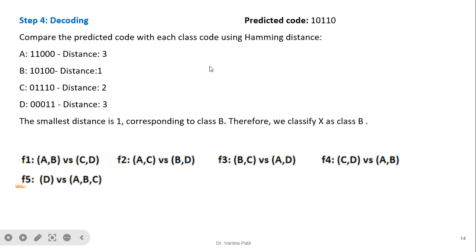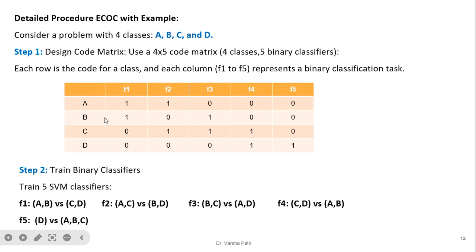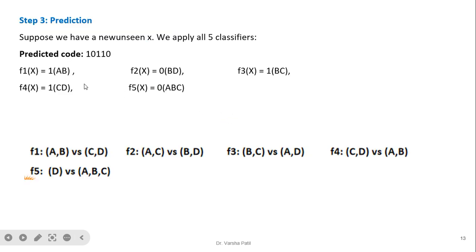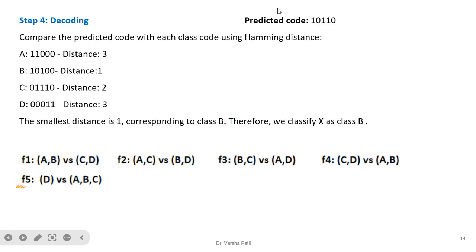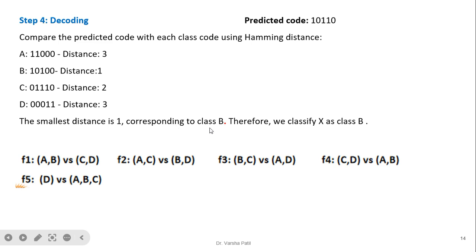We now compare the predicted code 1, 0, 1, 1, 0 with each class code using Hamming distance. When bits are the same, the distance is 0; when bits differ, the distance is 1. Class A is coded 1, 1, 0, 0, 0 — compared to predicted code: three mismatches, distance = 3. Class B is coded 1, 0, 1, 0, 0 — only one mismatch, distance = 1.